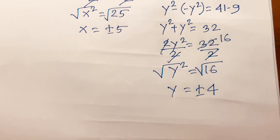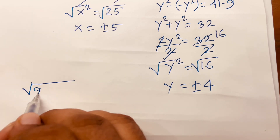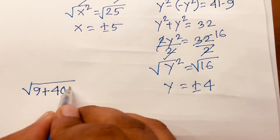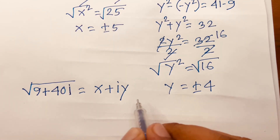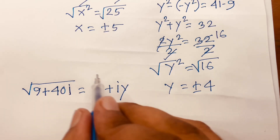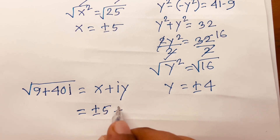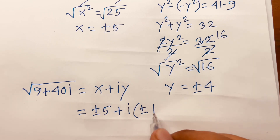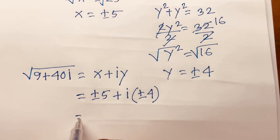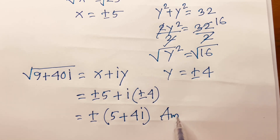Remember that we let √(9 + 40i) = x + iy. So now I put in the values of x and y. We found x = ±5 and y = ±4. Since ± is common, it will be ±(5 + 4i). This is our final answer.